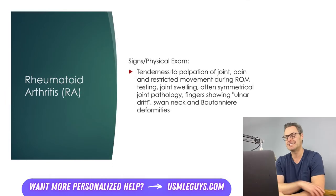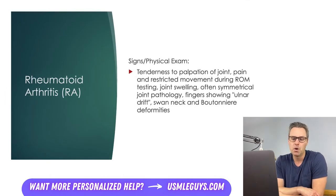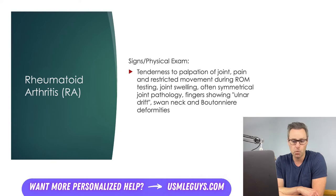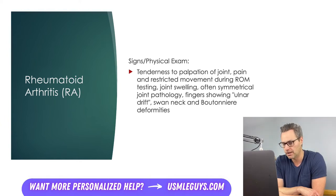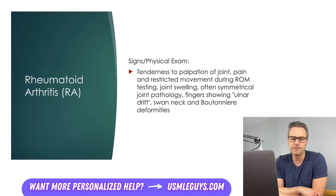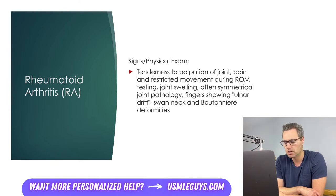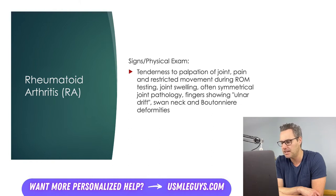On physical exam, affected joints are tender to palpation, swollen, and may have restricted passive and active range of motion. Bilateral findings may be seen, particularly involving the MCP and PIP joints of the hands. Fingers may show ulnar drift, which occurs when MCP joints become swollen and deformed, causing the fingers to orient toward the ulna. Swan neck deformities involve hyperextension at the PIP joint and flexion at the DIP joint. Boutonniere deformities are characterized by flexion at the PIP and hyperextension at the DIP joint.